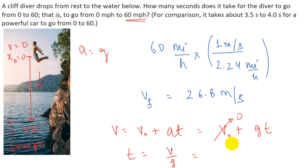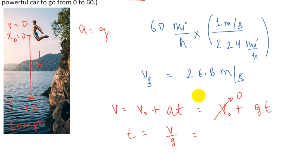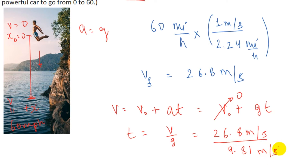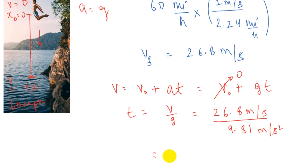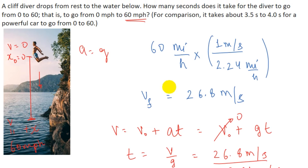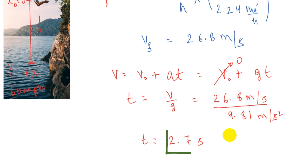Substituting the values: v is 26.8 m/s and g is 9.81 m/s², giving t = 2.7 seconds. This is significantly less than the 3.5 to 4 seconds it takes a powerful car to go from 0 to 60 miles per hour, so the diver accelerates faster than a sports car.